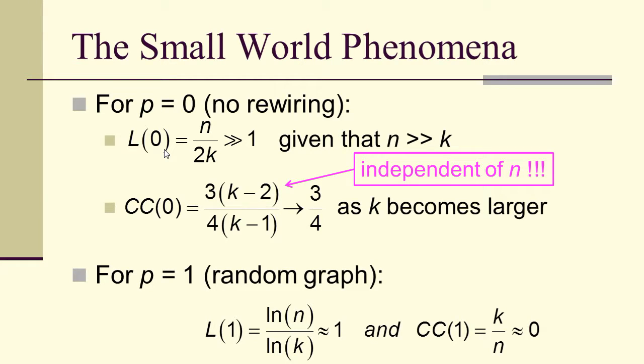For p equals 1, we have a completely random graph, an Erdős-Rényi graph. And there you can show the average path length is log(n) over log(k), and the clustering coefficient, when the probability is 1, is practically 0, as we saw a bit earlier.